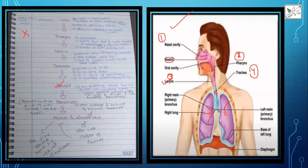The bronchioles lead into fine tubes called alveolar ducts. At the end of the alveolar ducts are clusters or pouches called alveoli. The alveoli are sac-like structures that form a network bounded by capillaries, where the actual gaseous exchange takes place.